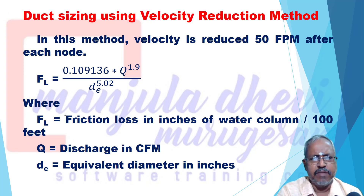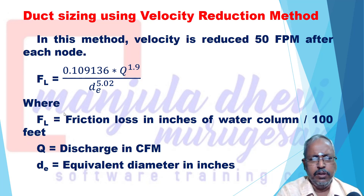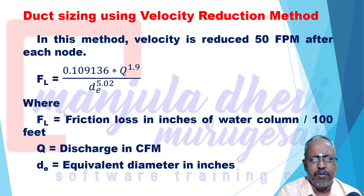In this method, velocity is reduced by 50 FPM after each node. So over each node, velocity is reduced by 50 FPM. This is the assumption: a direct reduction of 50 FPM is applied.